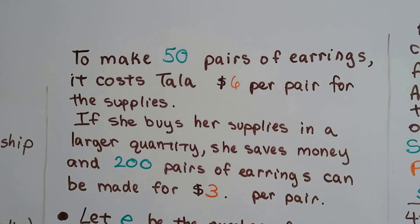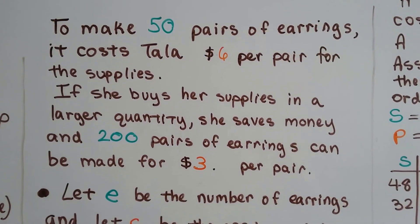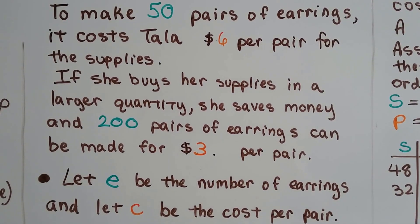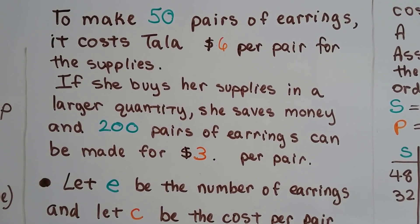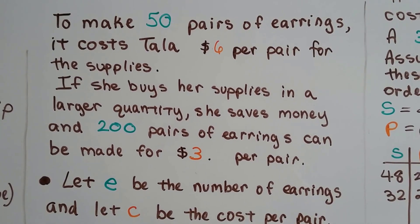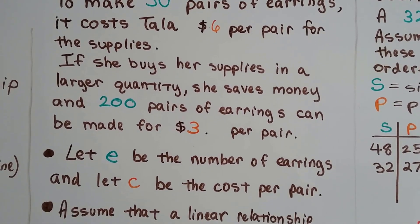Okay, so let's see what we've got here. To make 50 pairs of earrings, it costs Tala $6 per pair for the supplies. If she buys her supplies in a larger quantity, like in bulk, she saves money. And 200 pairs of earrings can be made for only $3 a pair. Wow, she cuts her cost in half, doesn't she? So we're going to let e be the number of earrings she makes and c be the cost per pair.